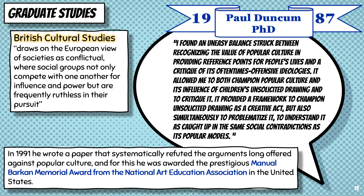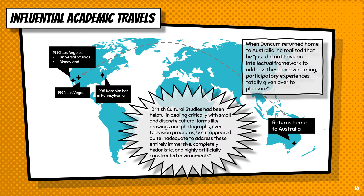In 1987, Duncan received his PhD and began to advocate for the study of popular culture as a legitimate part of art education. In 1991, he wrote a paper that systematically refuted the arguments long offered against popular culture, and for this he was awarded the prestigious Manuel Barkin Memorial Award from the National Art Education Association in the United States. In 1992, Duncan visited the United States and traveled across the country staying with art educators. On the recommendation of Canadian art educator Graham Chalmers, Duncan visited Las Vegas, then traveled to Los Angeles to visit Universal Studios and Disneyland. Duncan commented how these places made him feel disoriented, astonished, thrilled, and overwhelmed, but also lost. When he returned home to Australia, he realized he did not have an intellectual framework to address these overwhelming participatory experiences totally given over to pleasure.